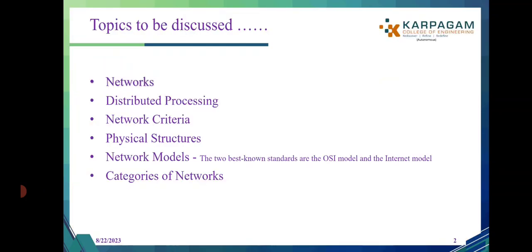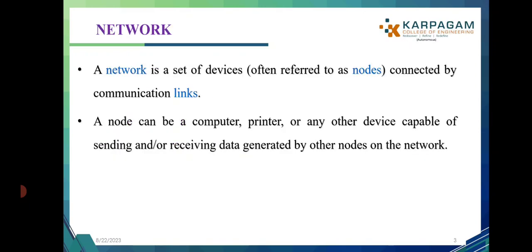Every network has the property of distributed processing. Distributed processing is when a task is divided among multiple computers instead of one single large machine responsible for all aspects of processing. Separate computers handle a subset, and the components interact with one another to achieve a common goal. All networks have this distributed processing property in order to perform data communication.